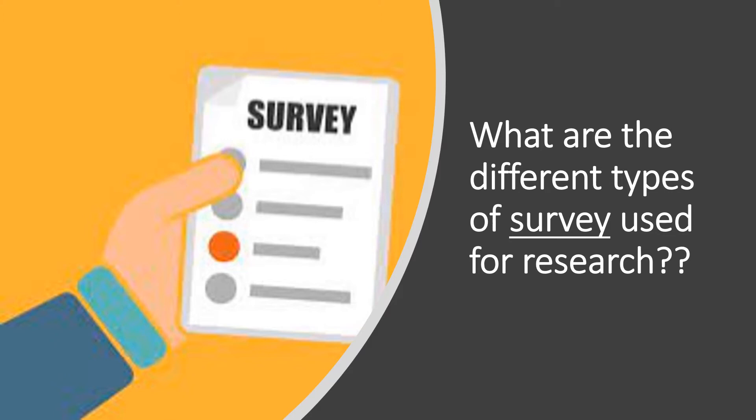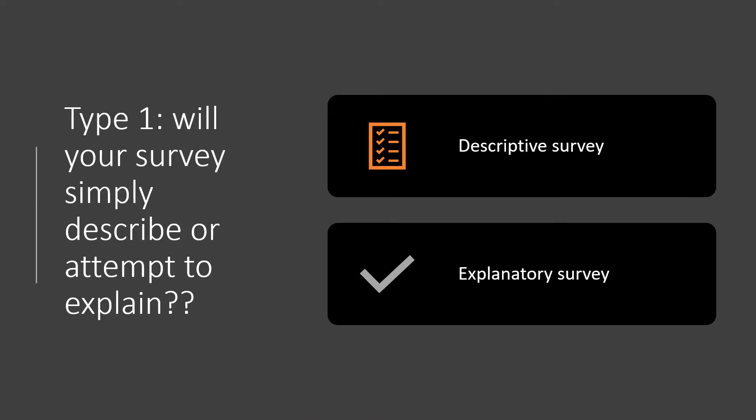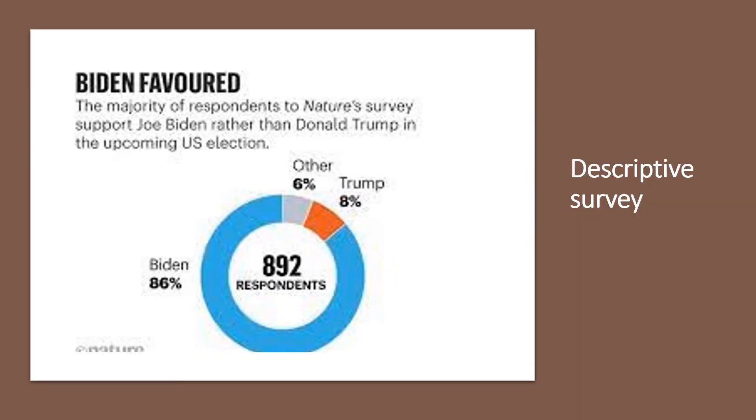As a research supervisor, I have certainly found survey construction to be the activity most underestimated in terms of difficulty — and not just by students; even professional researchers have a hard time getting it right. So let's look at the different types of surveys you can use for your research, so that you can choose the right one. The first classification is: will your survey simply describe, or attempt to explain? Under this category, there are two main types: a descriptive survey and an explanatory survey.